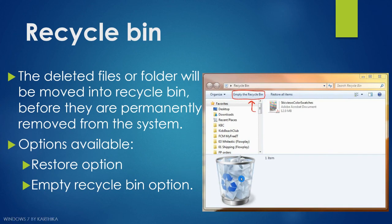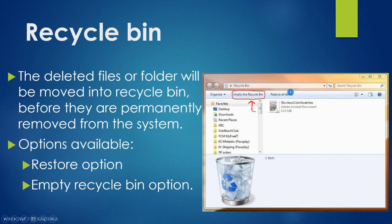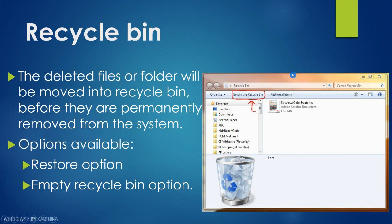To see your deleted files, double-click on the recycle bin icon on the desktop. The empty recycle bin option deletes all files permanently — once done, you cannot retrieve them. The restore option retrieves a particular deleted file or folder, returning it to its original location. There is also a restore all items option, which takes all items inside the recycle bin back to their original folders.